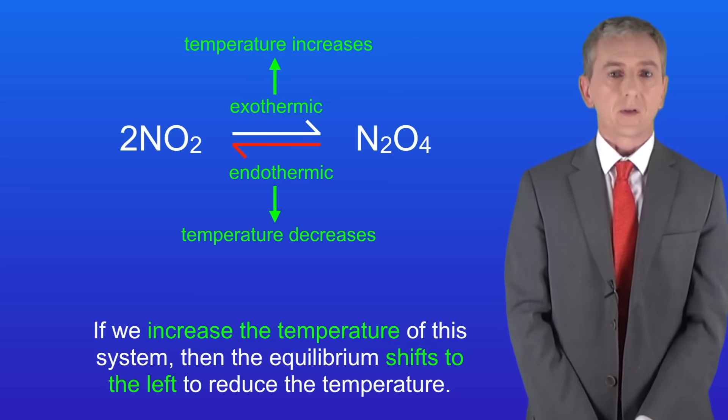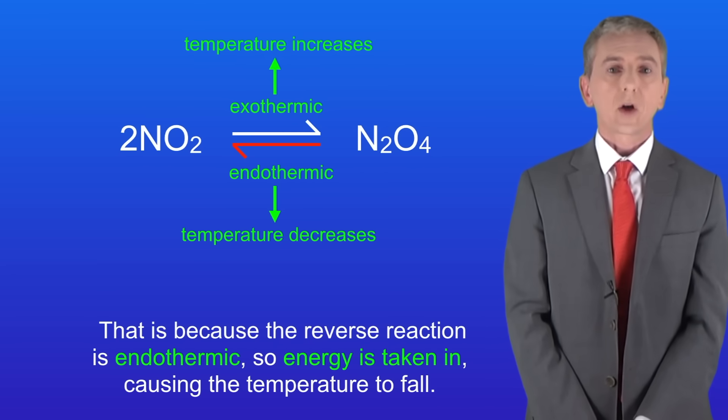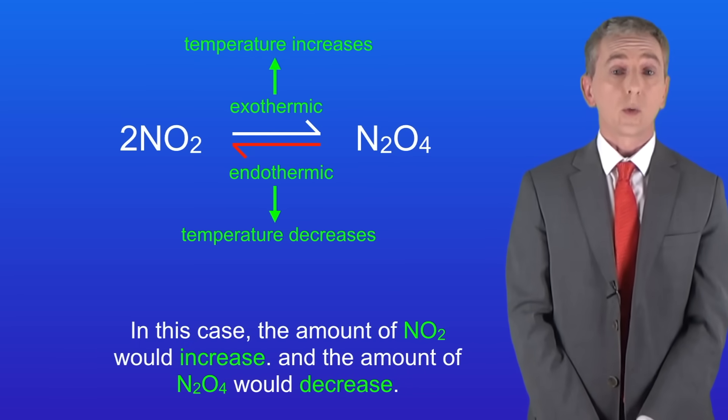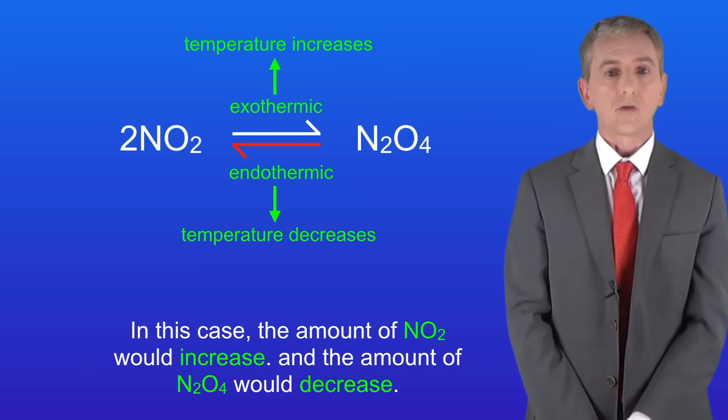So if we increase the temperature of this system, then the equilibrium shifts to the left to reduce the temperature. That's because the reverse reaction is endothermic, so energy is taken in, causing the temperature to fall. So in this case, the amount of NO2 would increase and the amount of N2O4 would decrease.